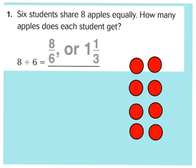Let's read this division problem together for number one. It says six students share eight apples equally. 'Share' is my clue word that we're dividing, and 'equally' is another clue word. How many apples does each student get? So you're dividing up eight apples among six students, so your equation will be eight divided by six.